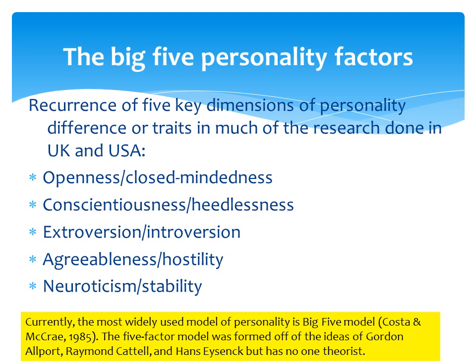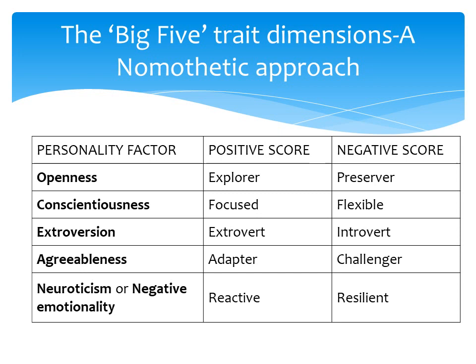Perhaps more scientifically recognized is the Big Five personality factors, often called OCEAN — Openness, Conscientiousness, Extroversion, Agreeableness, and Neuroticism. It is currently the most widely used model of personality. The five-factor model drew on ideas from Gordon Allport, Cattell, and Hans Eysenck, though no single theorist owns it. Scores can be positive or negative — on openness, a positive score is called an explorer, and negatively, a preserver.